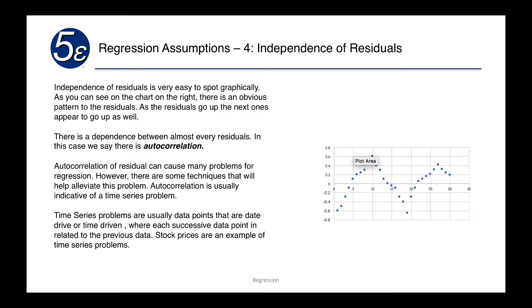The fourth regression assumption is that the residuals are independent. This is very easy to spot graphically. As you can see on the chart on the right, there's an obvious pattern to the residuals. As the residuals go up, generally the next one goes up. We call this a dependence between every residual, and we call this autocorrelation.